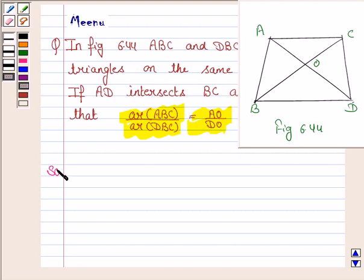So let's now move on to the solution and let's first write what is given to us. We are given triangles ABC and DBC stand on the same base.